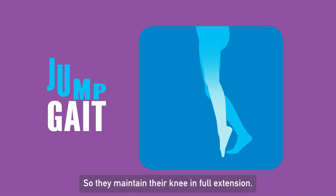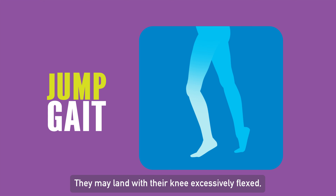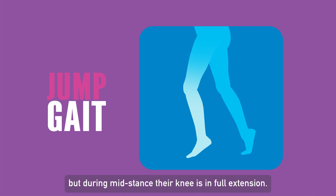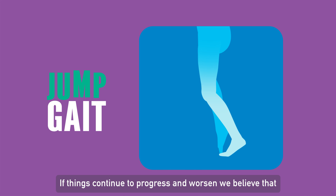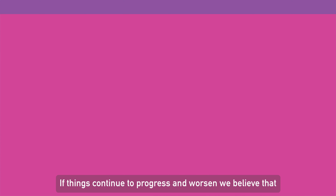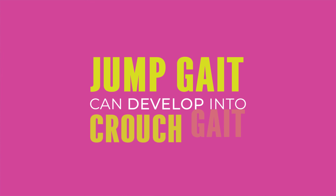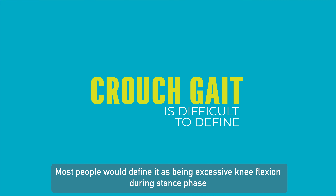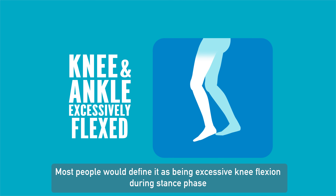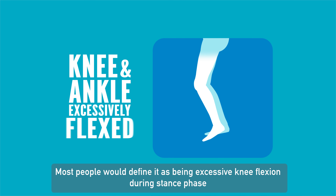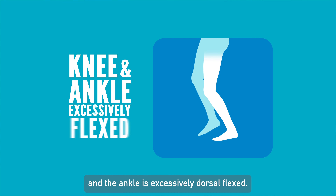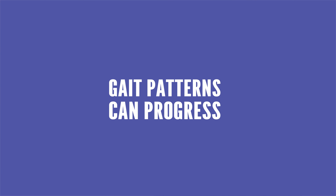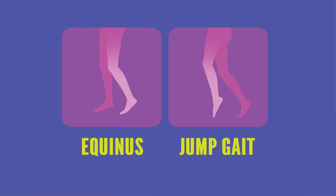One real example of that is the differentiation between true equinus and apparent equinus. In both cases, you may not have the foot flat on the ground. But in one case, that's due to primary pathology — stiffness in the ankle. In the other case, for apparent equinus, it's because of problems upstream, particularly with the knee with excessive knee flexion.